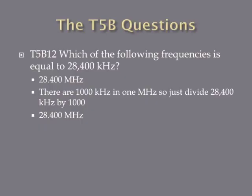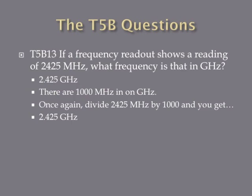Which of the following frequencies is equal to 28,400 kilohertz? The answer is 28.4 megahertz. There are 1,000 kilohertz in 1 megahertz, so divide 28,400 by 1,000 to get 28.4 megahertz. Similarly, if a frequency readout shows 2,425 megahertz, what is that in gigahertz? Since there are 1,000 megahertz in 1 gigahertz, divide 2,425 by 1,000 to get 2.425 gigahertz.